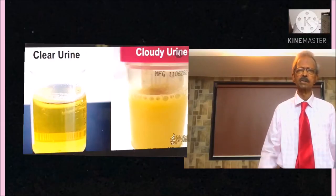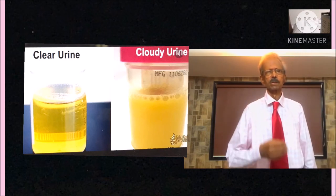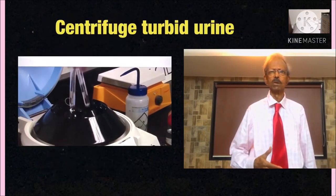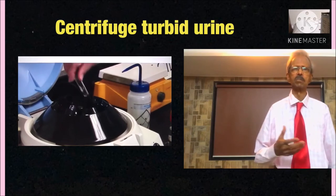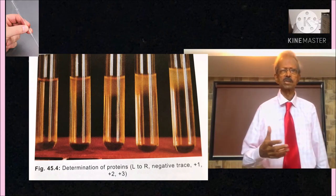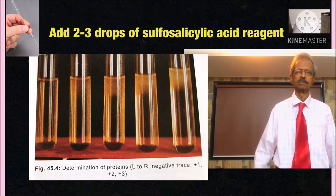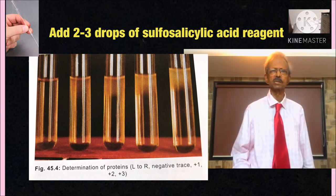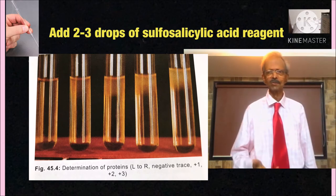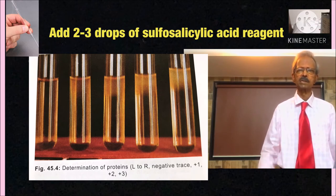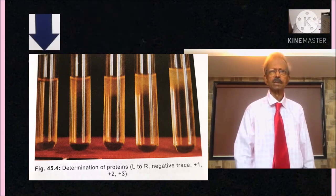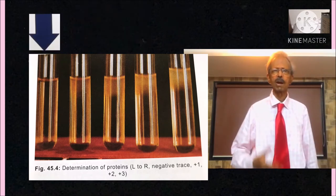For urine protein test, if urine is clear, transfer urine to a clean and dry test tube. If urine is not clear, then centrifuge it for 10 minutes at 3000 rpm and transfer supernatant to a test tube. On the top of this urine, then add 2-3 drops of sulfosalicylic acid reagent. And observe upper top portion of urine. If proteins are present, these get denatured due to sulfosalicylic acid and precipitate out. No appearance of precipitate means urine protein test is negative.